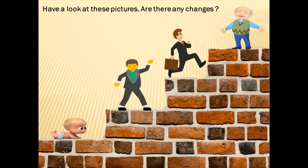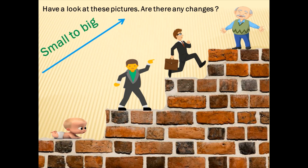You see a small baby. In the next picture you see a young boy. The third picture is of a young man who is busy running to his work. And the last picture is a picture of a grandfather. So you see the pictures are placed from small to big. Now in maths, when it's small to big, we call them ascending numbers — they are in ascending order.